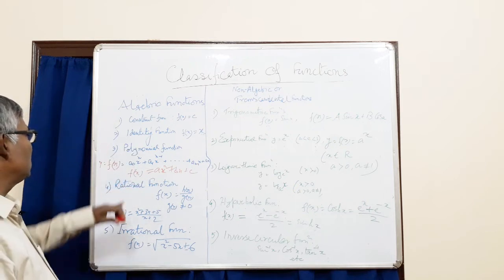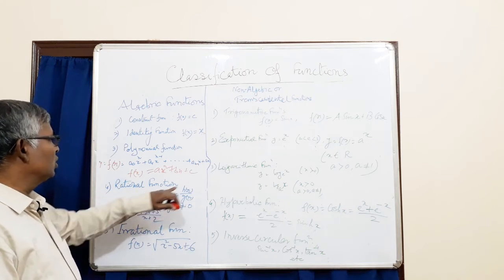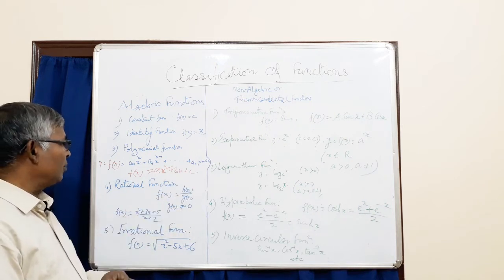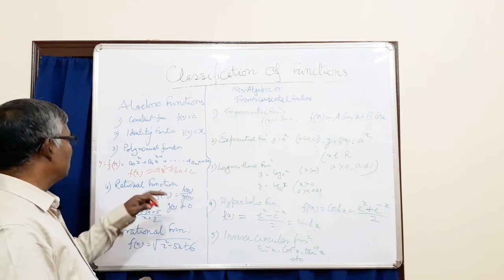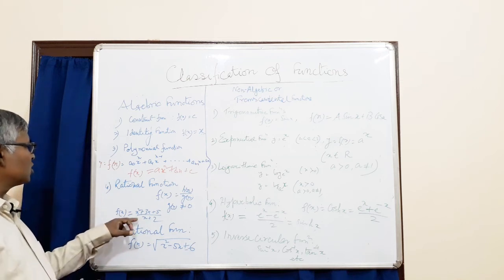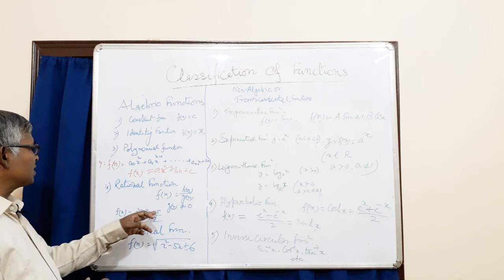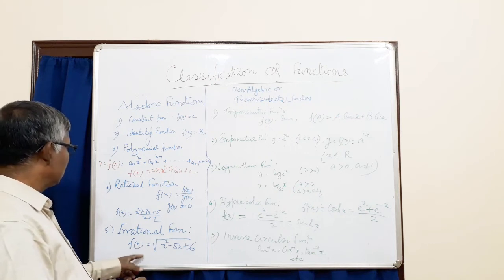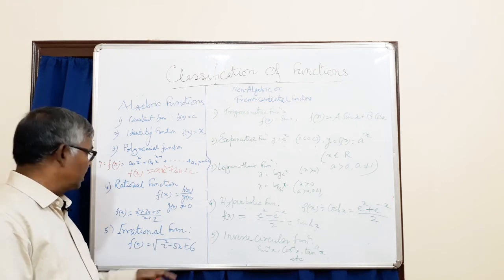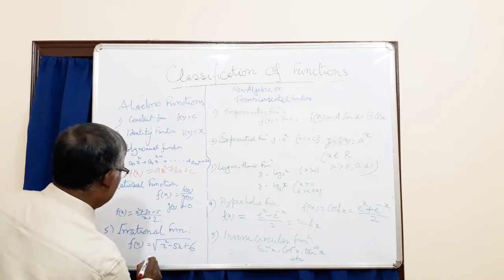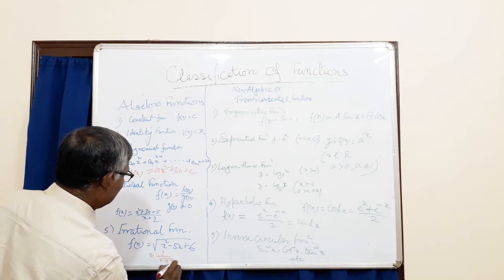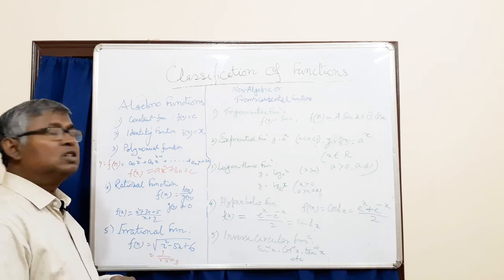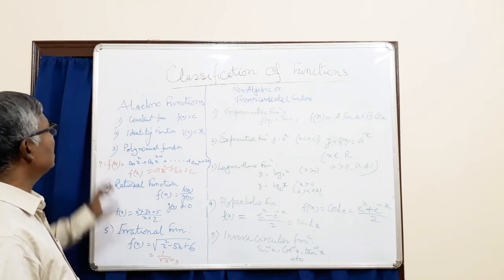Another type of algebraic function is the rational function, written as f(x) equals h(x) divided by g(x), where g(x) is not equal to 0 for every value of x in R. For example, f(x) equals (3x squared plus 5x plus 2) divided by (3x plus 5) divided by (x minus 2). Another type is the irrational function, such as f(x) equals the square root of (x squared minus 5x plus 6), or f(x) equals 1 over the square root of (x minus 3). So all these five types are called algebraic functions.